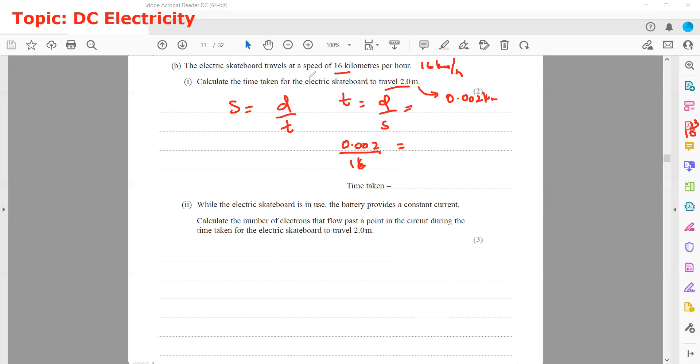As I mentioned, this is 16 km per hour - in one hour it will cover 16 kilometers. For the distance, we converted to kilometers. So when we calculate the time, the time will be in hours. So it will be 0.002 divided by 16, which is 0.000125 hours.